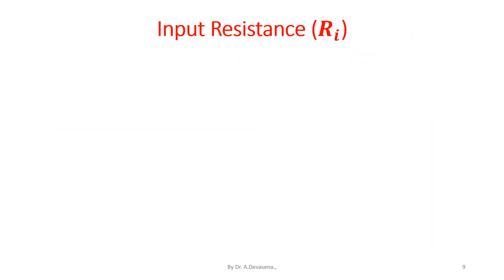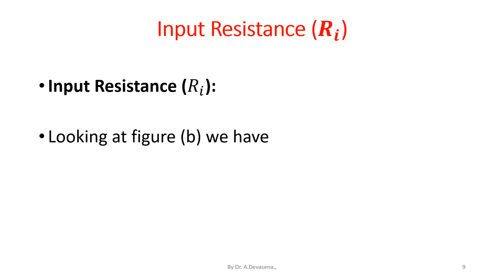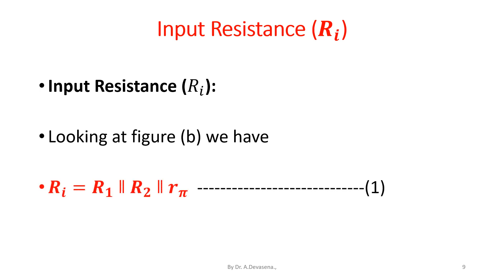We are going to obtain the derivation for the input resistance R suffix I. Input resistance R suffix I is derived with the help of Figure B. Looking at Figure B, we have R suffix I equal to the parallel combination of R1 parallel R2 parallel R pi. This parallel combination is indicated in Figure B.